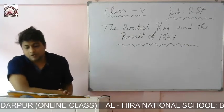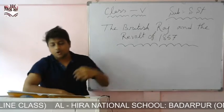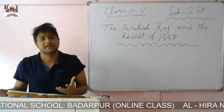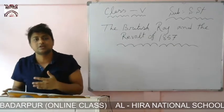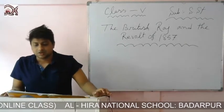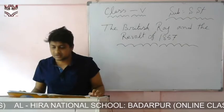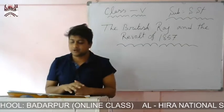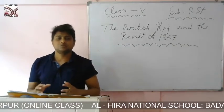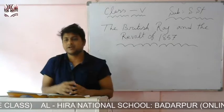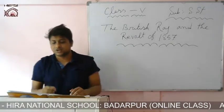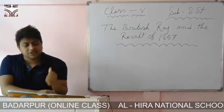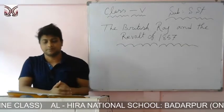People from all walks of life started planning to oust the British from the country. There was growing dissatisfaction among Indians and they wanted to throw the British out of India. Unfortunately, those people were not united enough among themselves to change the British rule, and so they failed.